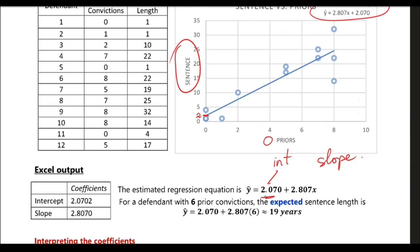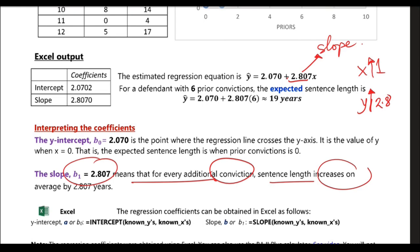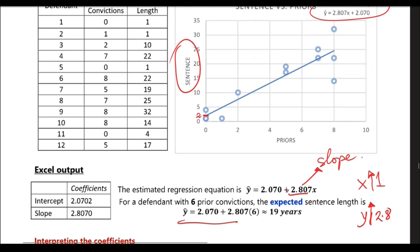That's how we interpret the y-intercept — if priors is zero, what is the expected sentence on average? Now, what about the slope? Slope means if x goes up by one, by how much will y change? In this case, y goes up by about 2.8. So for every additional conviction, sentence length increases on average by about 2.8 years for that particular kind of crime. The primary goal of obtaining this line is to use it to make estimates or predictions.